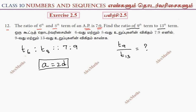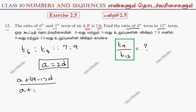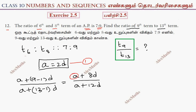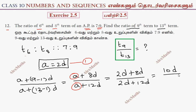Next, finding T9 by T13: T9 is a + (9 minus 1)d divided by T13 which is a + (13 minus 1)d. This gives a + 8d divided by a + 12d. Substituting a = 2d: 2d + 8d divided by 2d + 12d, which is 10d by 14d. Cancelling, this gives 5 by 7.